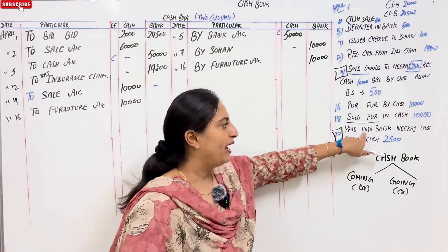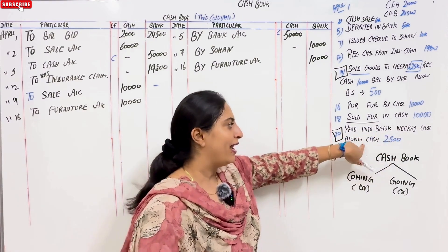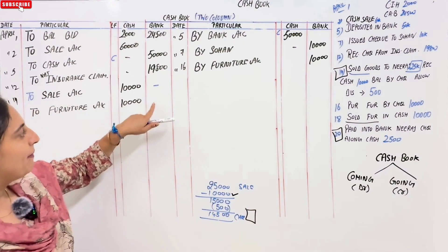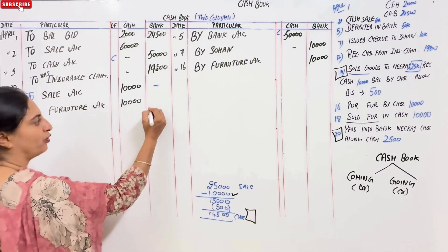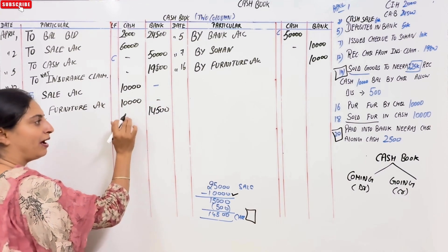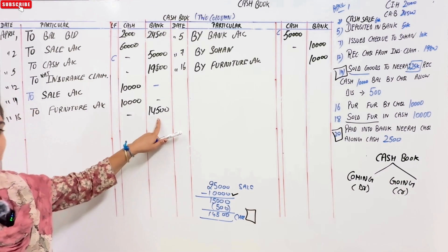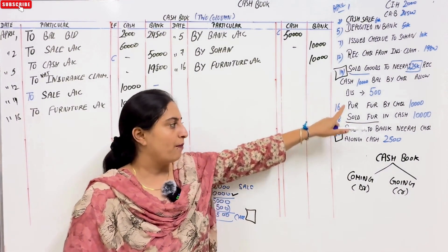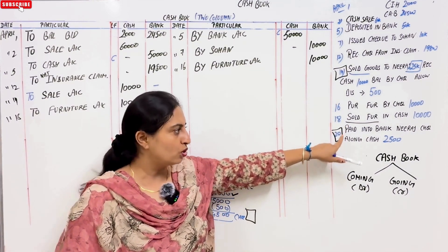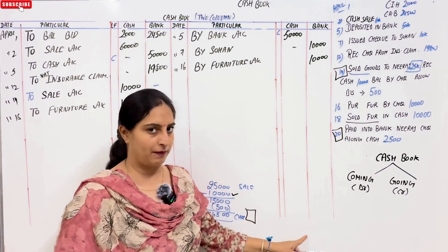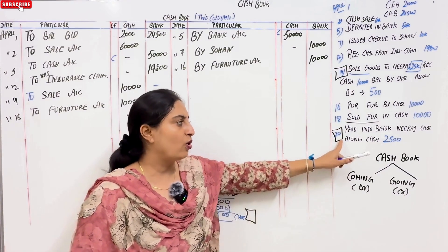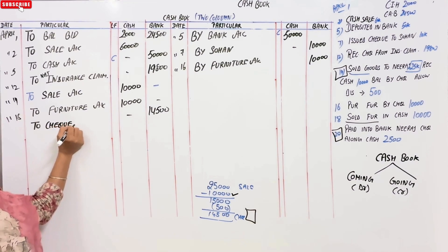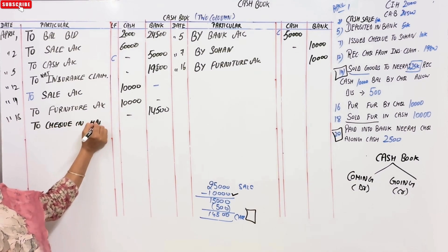This is April 20th. Paid Neeraj's cheque into bank along with cash of 2,500. Neeraj's cheque was for 14,500 — so welcome 14,500 in the bank column. Now, when you receive a cheque on a certain date but deposit it on a different date, you enter it on the deposit date. We will do the earlier entry in the journal proper. Write 'cheque in hand' for that.